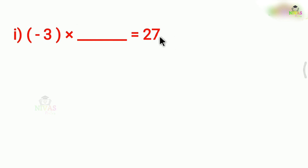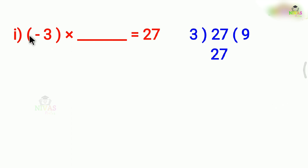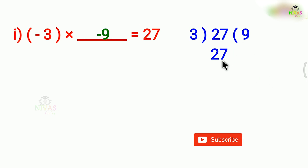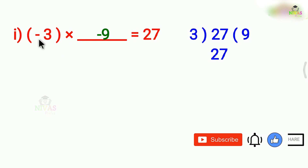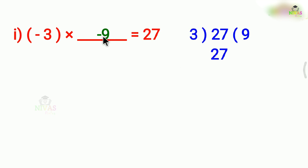This is 27 divided by minus 3. So, 27 divided by minus 3 gives us the quotient. Since there are two negatives, the first number is negative. The answer is minus 9.